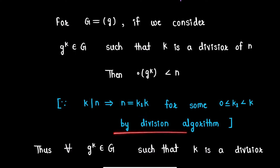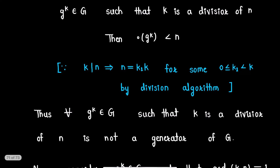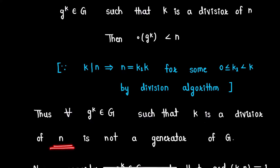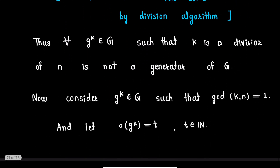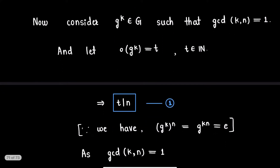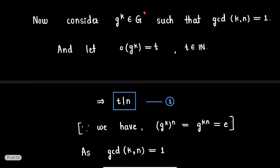This follows by the division algorithm. The order of g^k will clearly be k1, and k1 is strictly less than k. From here we can conclude that for all elements g^k in G such that k is a divisor of n — that is, a divisor of the order of group G — all these elements g^k are not generators of group G.